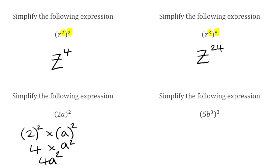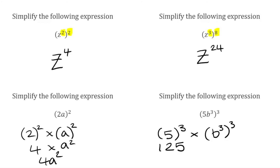For our final question, we've got 5b cubed, all raised to the power of 3. We're going to split it into separate brackets to make sure the cubed applies to every term. First, 5 cubed means 5 multiplied by itself 3 times: 5 times 5 is 25, times 5 again is 125. Then for b cubed raised to the power of 3, we multiply the indices: 3 times 3 is 9, giving b to the power of 9. So our final answer is 125b to the power of 9.